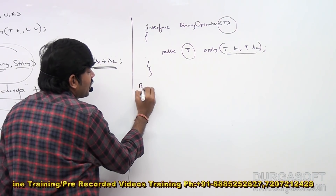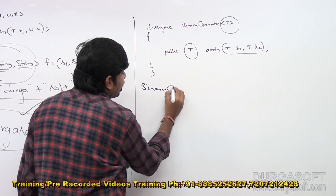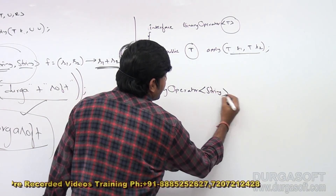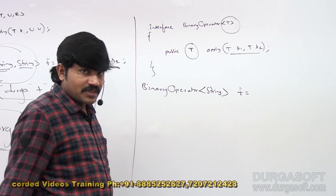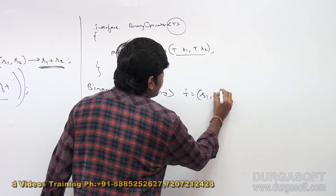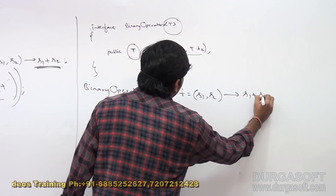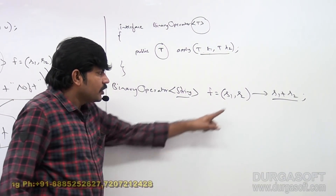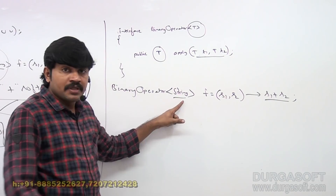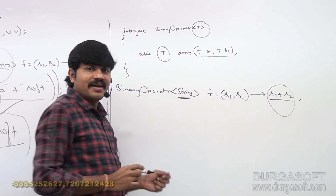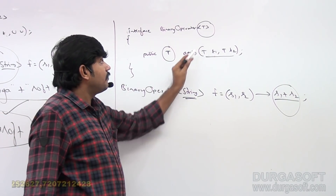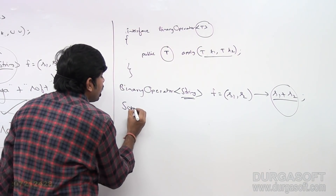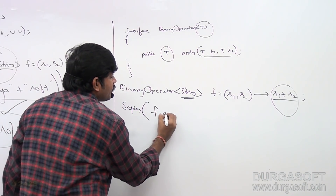Now let me declare a BinaryOperator of String: F equals a lambda where given S1 and S2, it returns S1 plus S2. S1 is String type, S2 is String type, and the return type is also String type. All three type parameters are the same type, so we should go for binary operator.